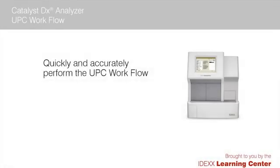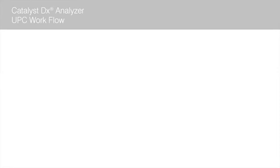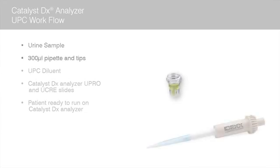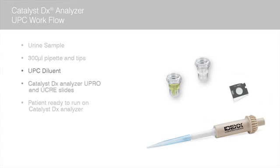In this video, we will demonstrate the proper way to run a UPC workflow on your Catalyst DX chemistry analyzer. Before you begin, make sure you have the following supplies and equipment on hand: a urine sample, a 300 µL pipette and tips, UPC diluent, and UCRE and UPRO Catalyst DX slides.